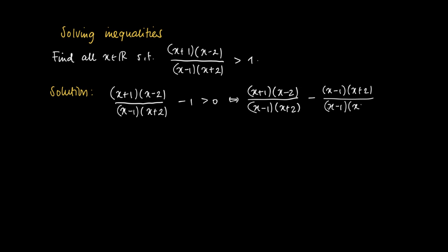The reason why we do this is that we now may write it as a fraction and get a rational function on the left hand side and compare it with 0, and we may proceed in the same way as in the former clip. So now we get (x+1)(x-2) minus (x-1)(x+2) divided by the denominator (x-1)(x+2) and compare it with 0.